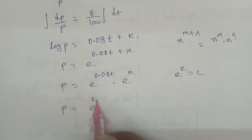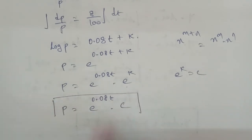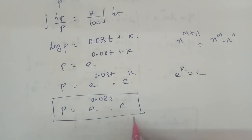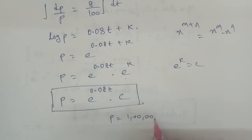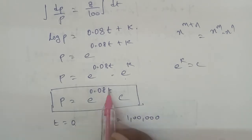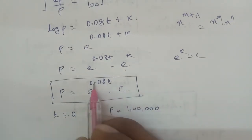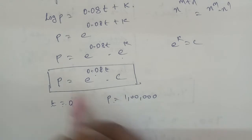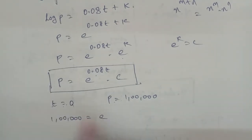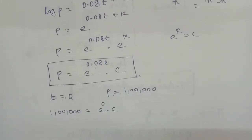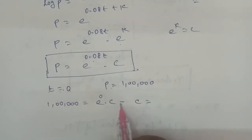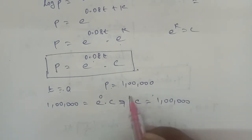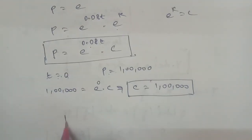Applying the initial condition: at t = 0, P = 1 lakh. Substituting, 1 lakh = C × e^(0 × 0.08) = C × e^0 = C × 1. Therefore C = 1 lakh. So the solution is P = 1 lakh × e^(0.08t).